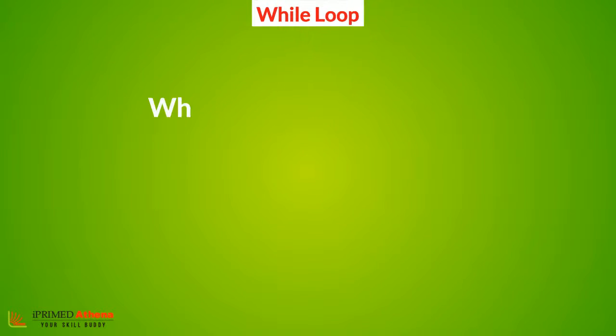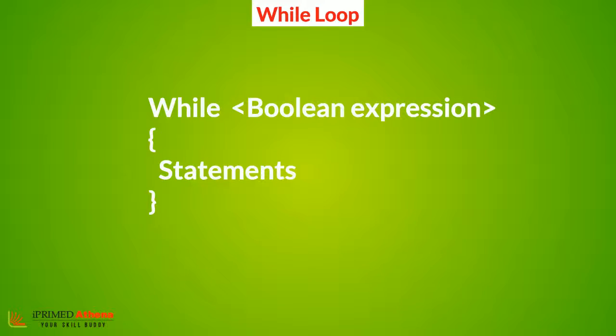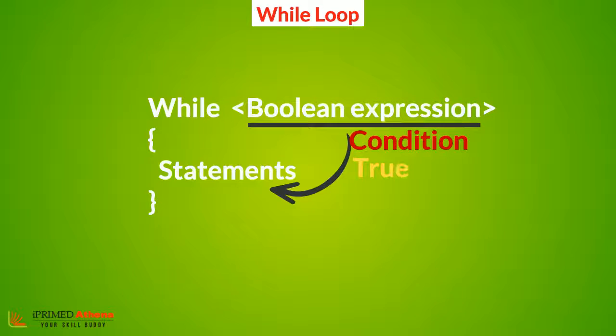A while loop begins with the keyword while, followed by a boolean expression and a set of statements to be executed within curly brackets. The boolean expression is a condition that is evaluated before the loop is entered. If the condition is true, the statements are executed, else the control flows out of the loop.